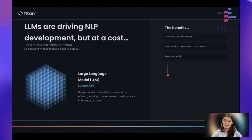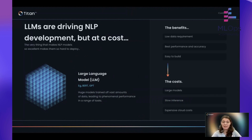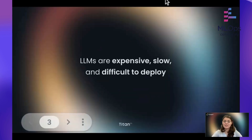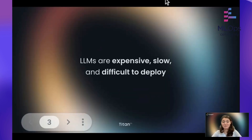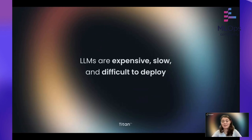However, these foundation models and LLMs come at a cost. They're really, really big, which makes them very difficult to deploy. You get slow inference, and you need to run them on very expensive hardware, so you get very expensive cloud costs. They're very expensive to deploy, they're slow, and all of this is really because of the L — they're large. These are really, really large models.